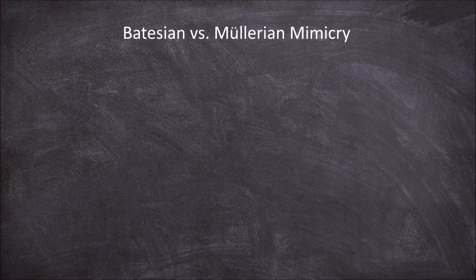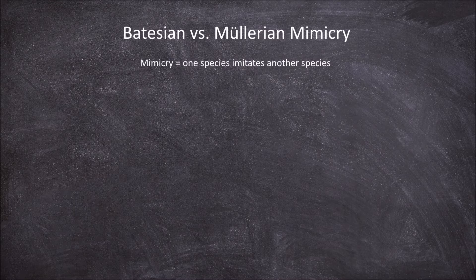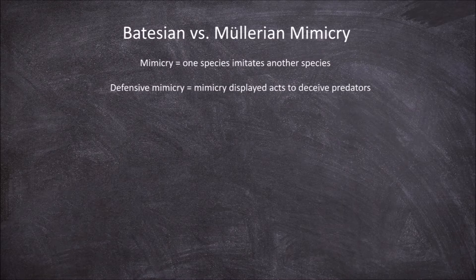In this video we're going to look at the difference between Batesian and Mullerian mimicry. Mimicry is when one species imitates another species, either for their gain or for the gain of both the mimic and the model. Batesian and Mullerian mimicry are both forms of defensive mimicry, where the mimicry displayed between species acts to help deceive predators into avoiding them.